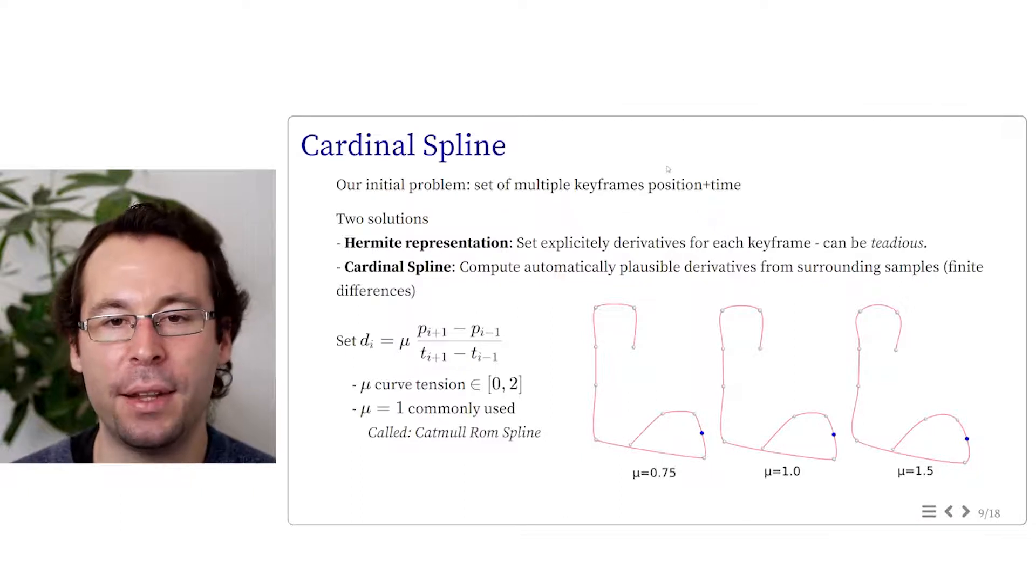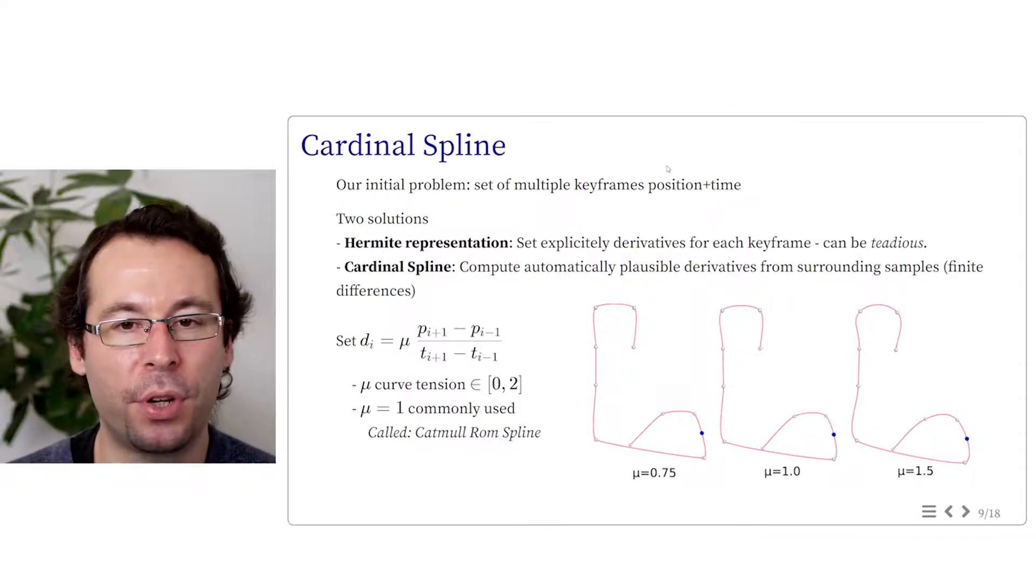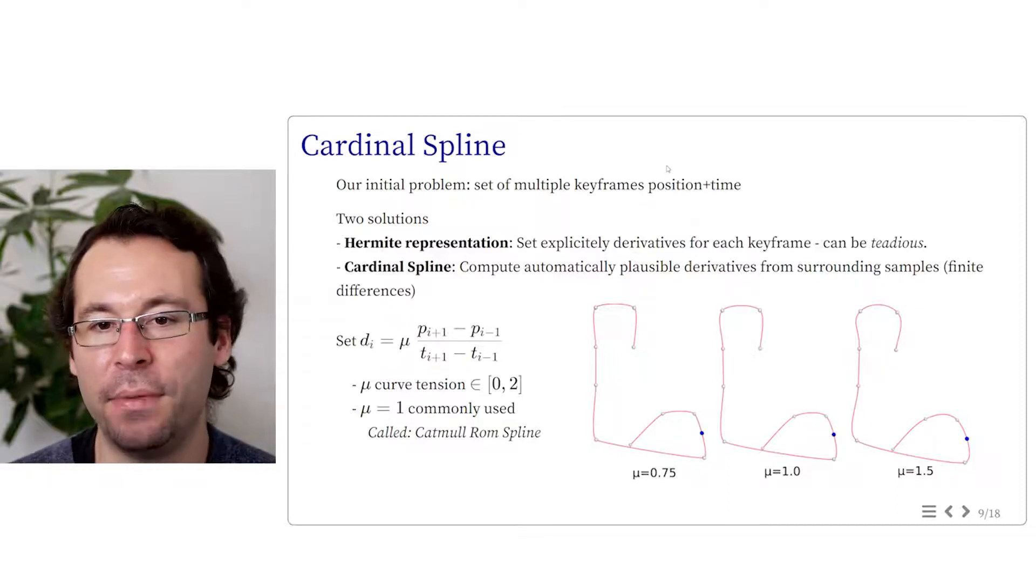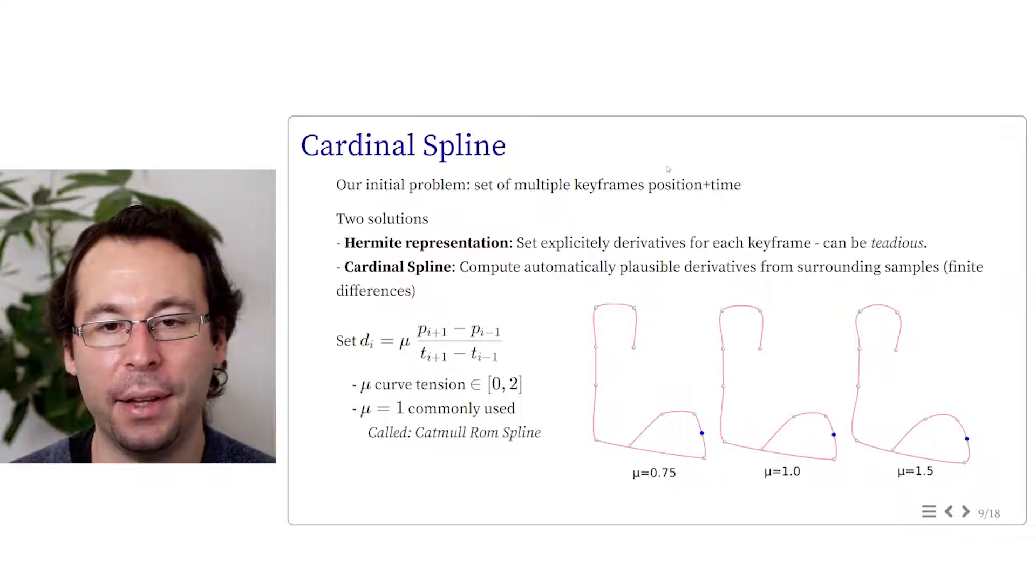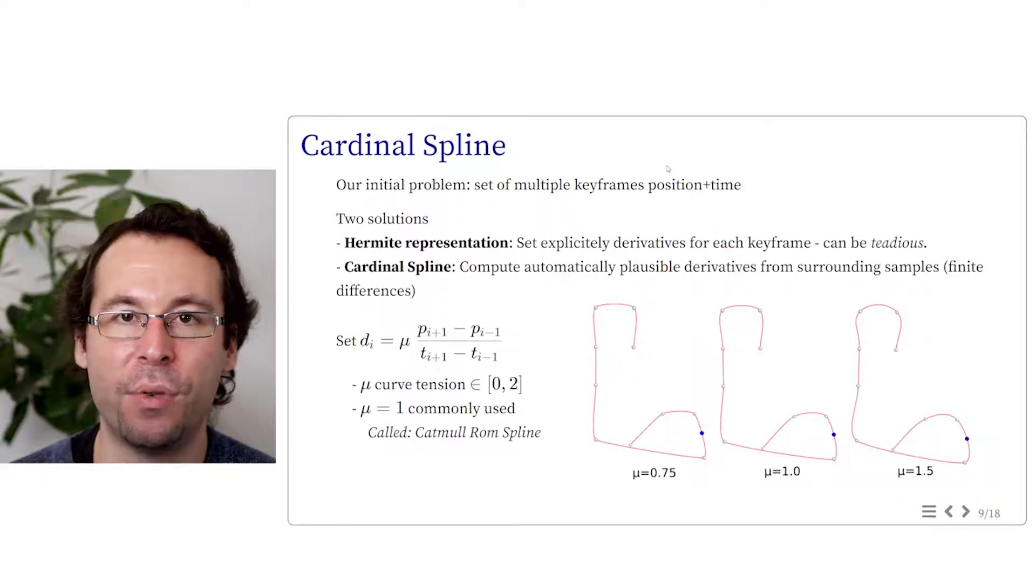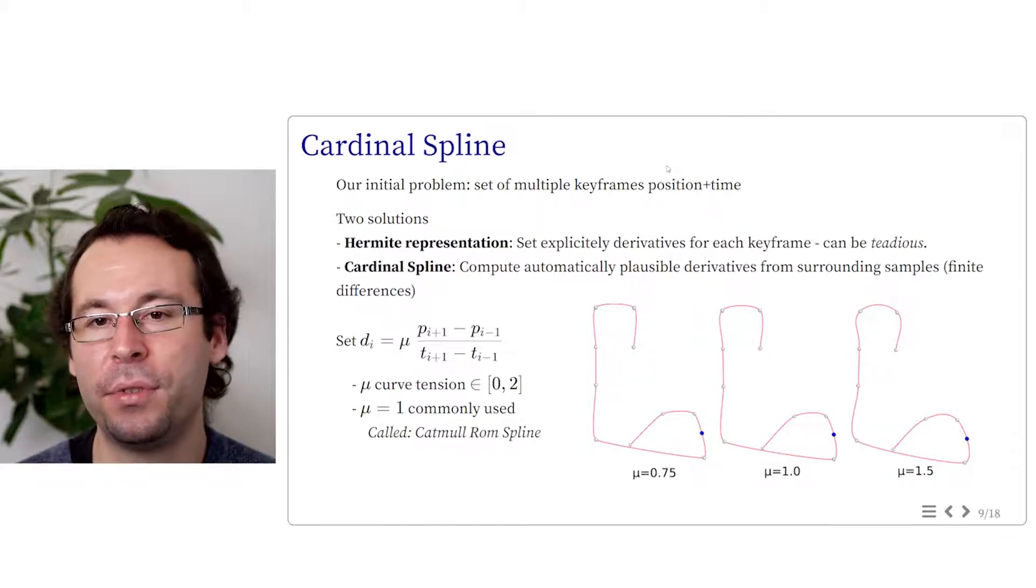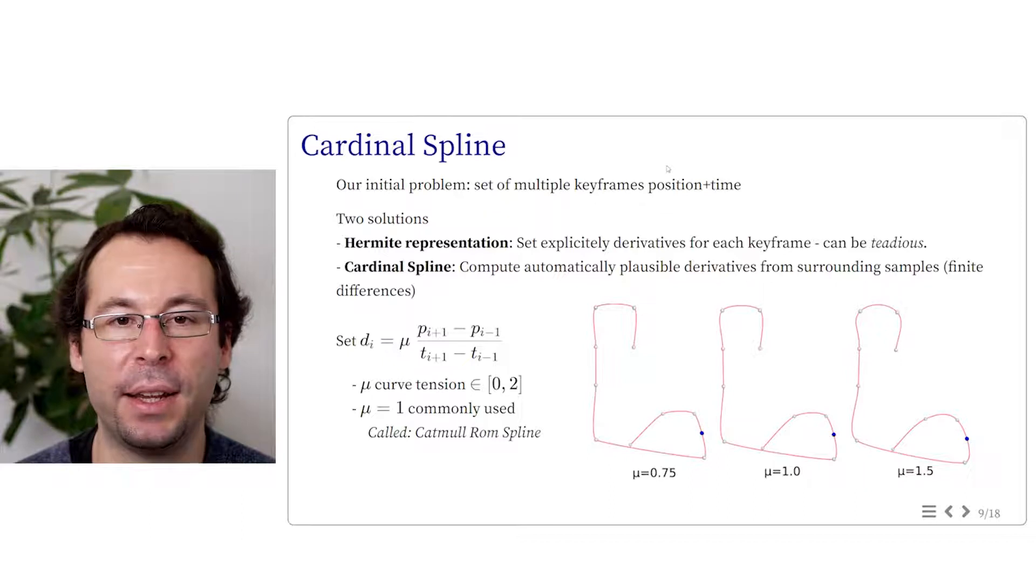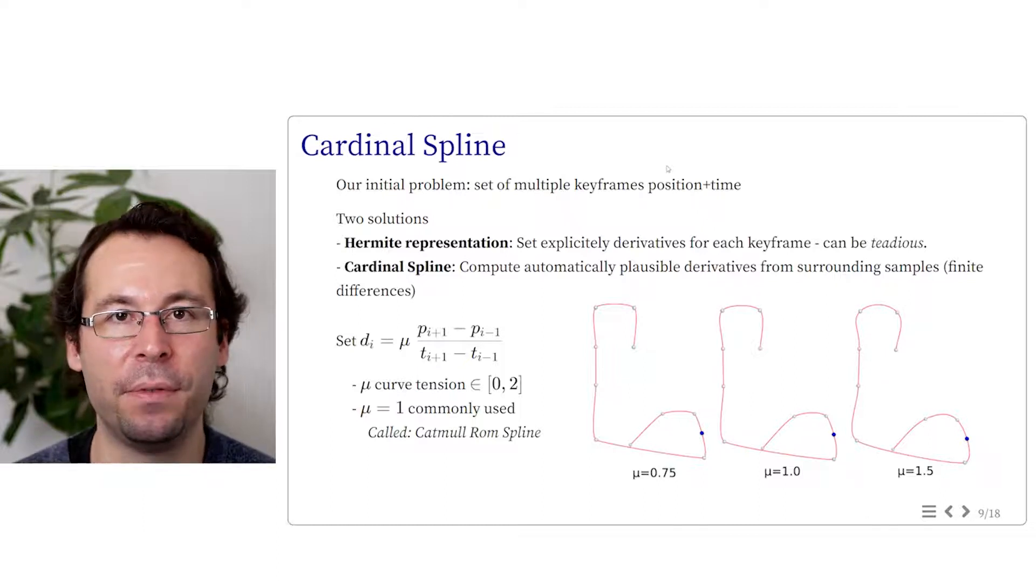If we set mu equals 1, we have the standard finite difference scheme, which is the most common parameter to give good results. And we even give to that a specific name. We call it the Catmull-Rom spline. So Catmull-Rom spline is the specific case of cardinal spline where mu equals 1. In practice, when using an animation tool, cardinal spline is often proposed to initialize the curve, and then this curve can be refined in modifying the derivatives locally if you want.